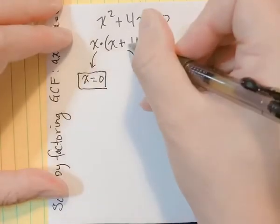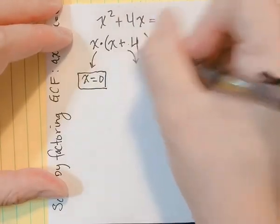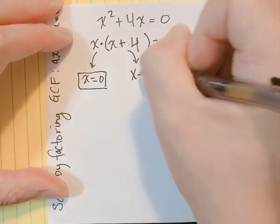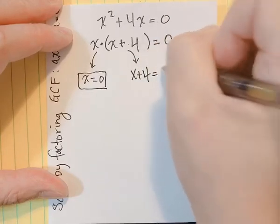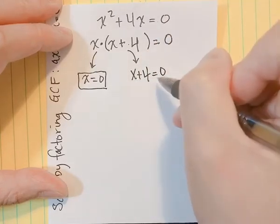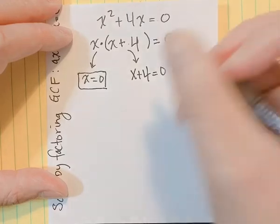The other factor, which is B, says X plus 4 could also be zero. If this is the case, if X plus 4 is equal to zero, we could solve for X.